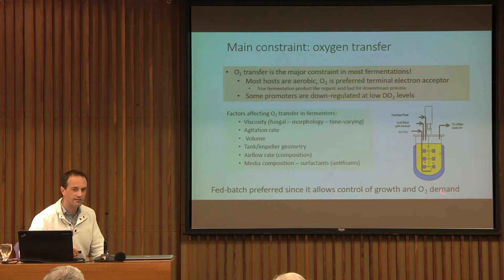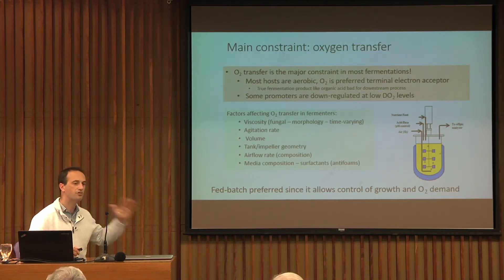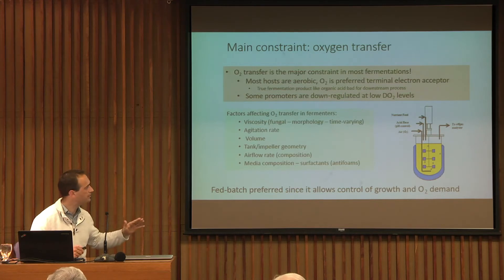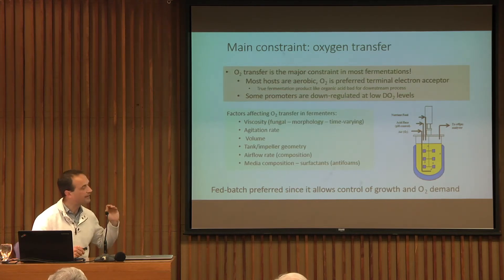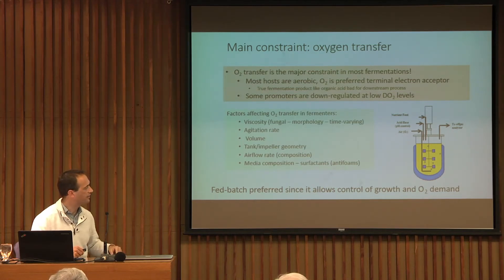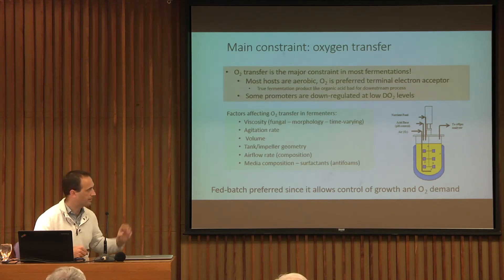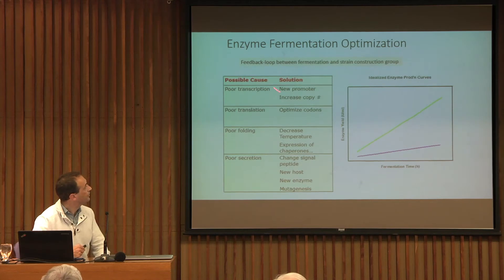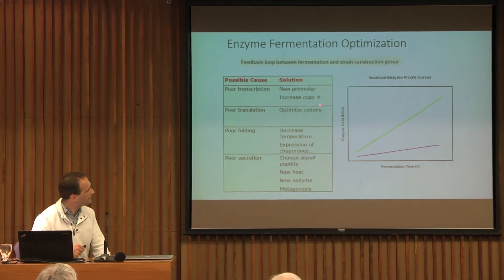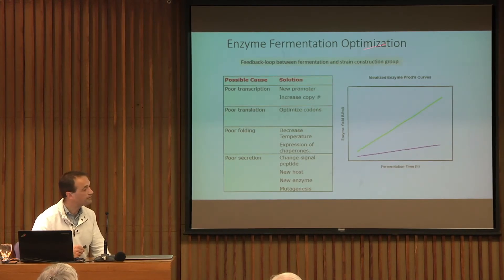Fed-batch fermentation is preferred because it allows control of growth rate and therefore of the oxygen demand. If you know you cannot supply enough oxygen, you can control feeding rate to stay below the threshold — feeding slowly rather than exponentially so you don't create low-oxygen zones in the fermenter.